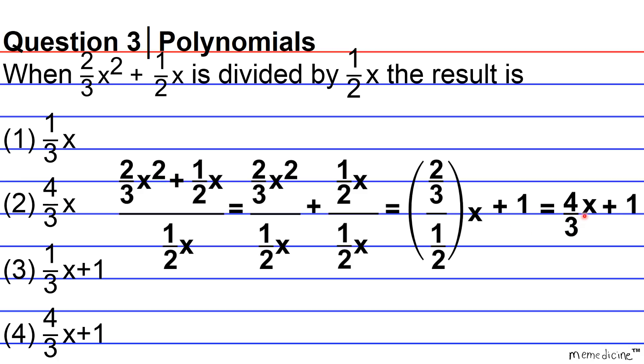So it looks like this is our answer. So the correct answer choice is going to be answer choice 4, 4 over 3x plus 1. Thanks for tuning in and good luck studying.